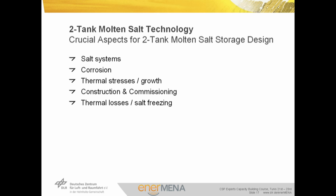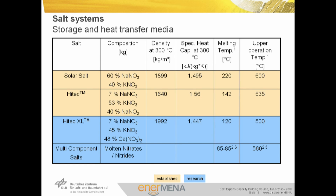Detailed knowledge about the corrosion process is important for cost-effective design, as is knowledge about heat transfer mechanisms to the environment. The cost for insulation should be compared against efficiency losses. Special care must be paid to the initial filling procedure — molten salt must always be kept above 250°C. Today's most popular molten salt is a mixture of potassium nitrate and sodium nitrate, operable between 220°C and 600°C. Another commercially available option is high-tech salt with a lower melting point of about 142°C but also a lower maximum temperature and higher cost.